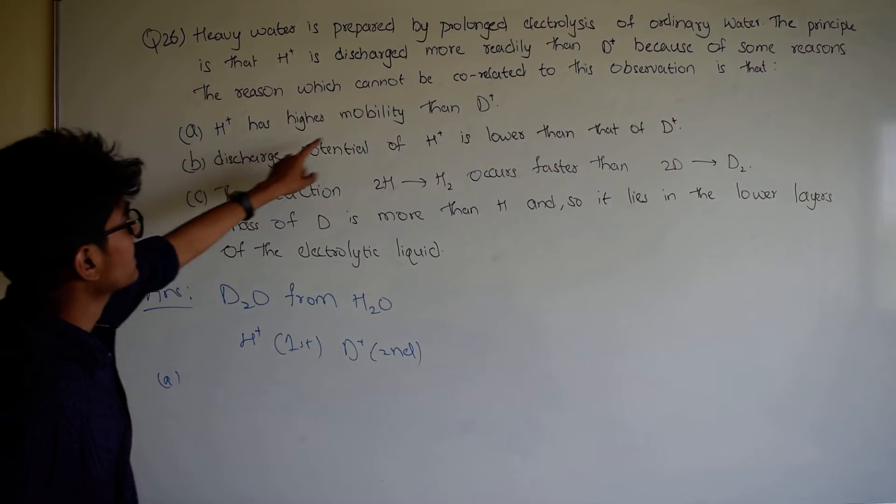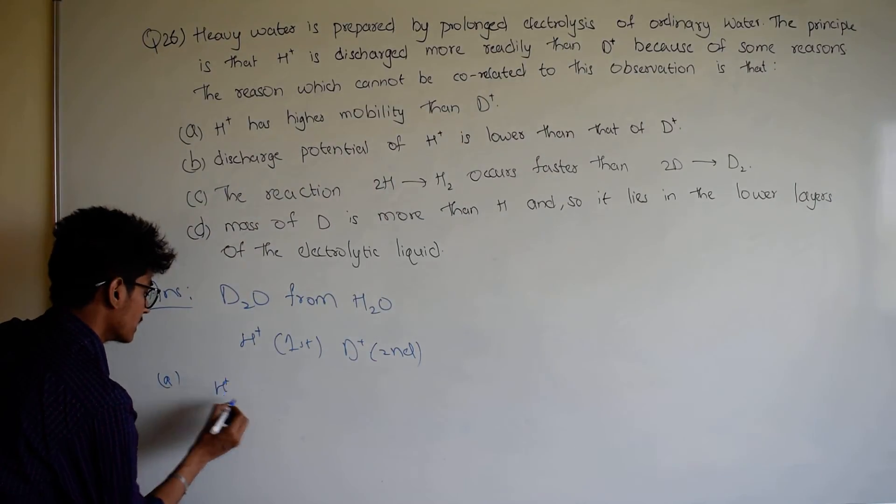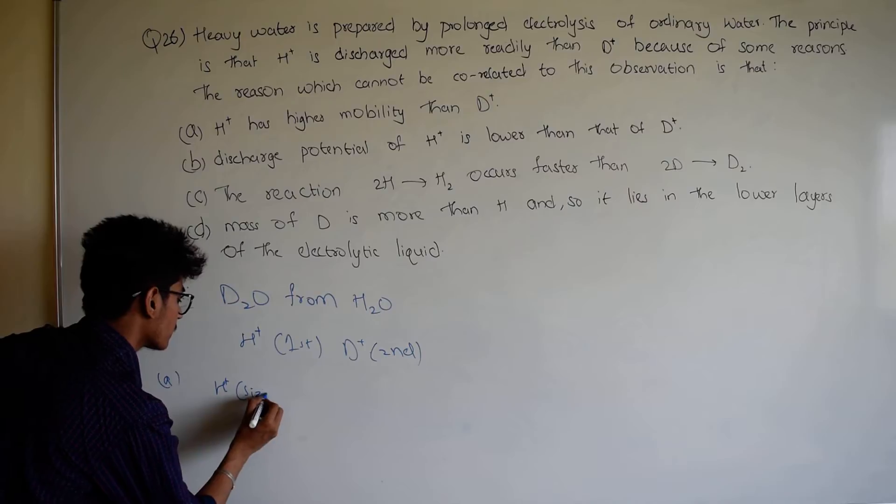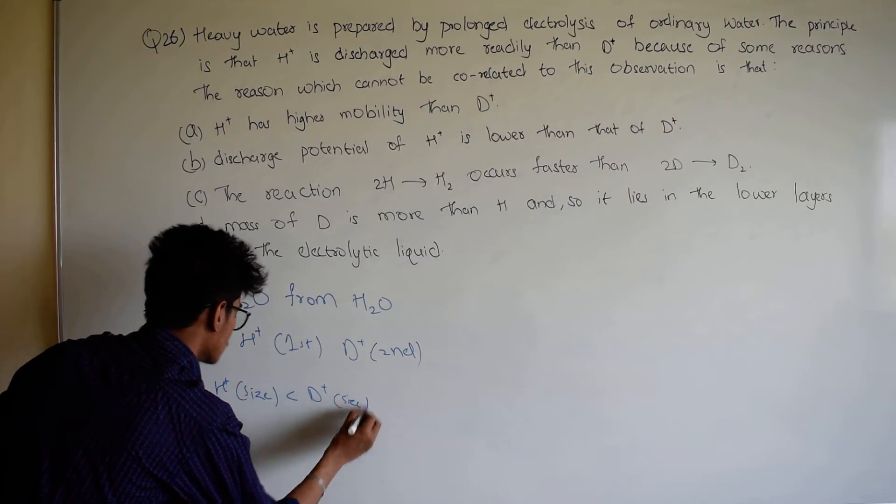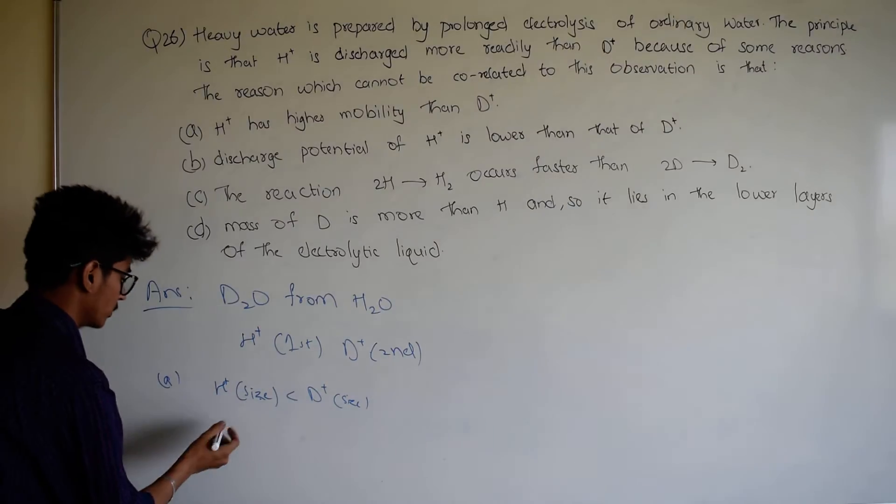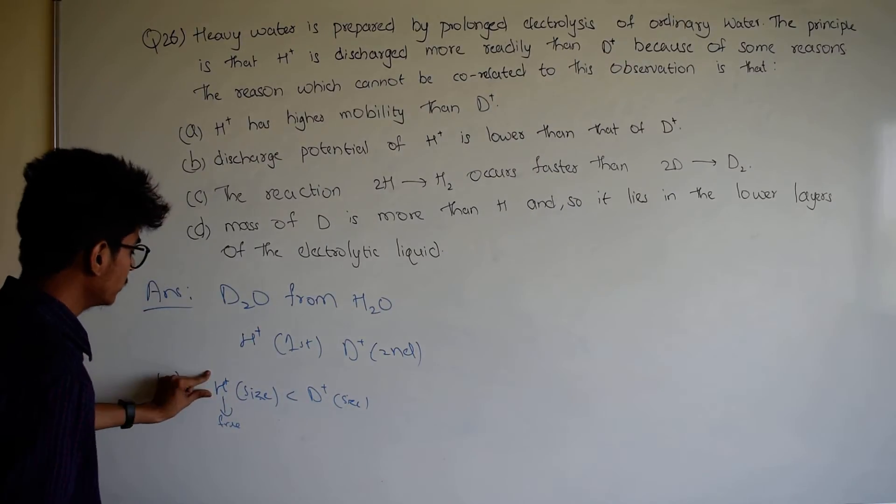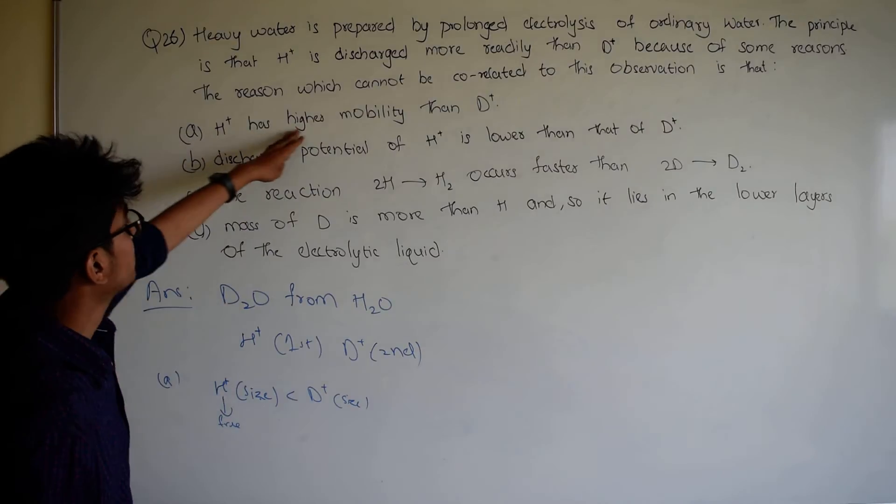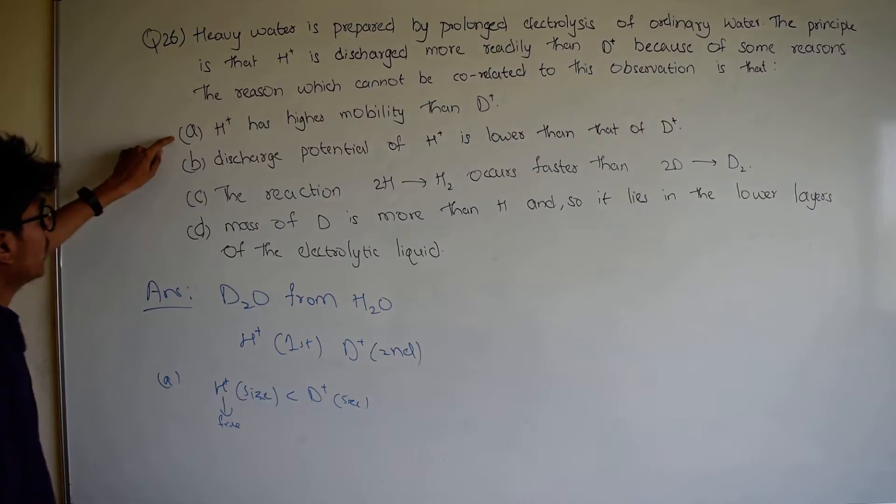First, H+ has higher quantity than D+ and H+ is less than D+ size. D in the higher mobility would be free, so D in the higher mobility would be D+. And this option is correct.